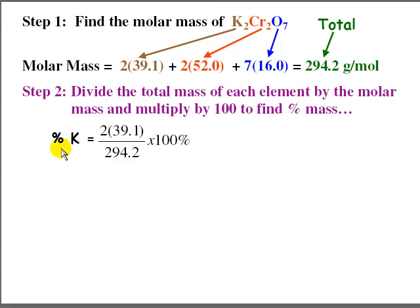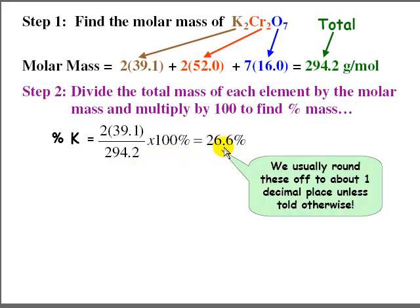So for example, for the percent potassium, we take 2 times 39.1 divided by 294.2 times 100. That gives us 26.6%. Usually we round these off to about one decimal place, unless you're told otherwise.